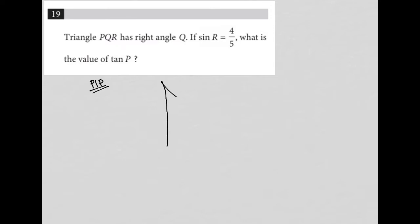So here's my right triangle. Here's my right angle. I'm going to label that as Q, like the question said. I'm going to put P and R at my other vertices here.